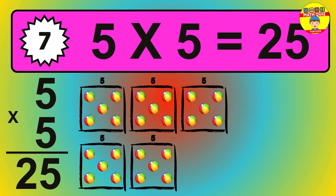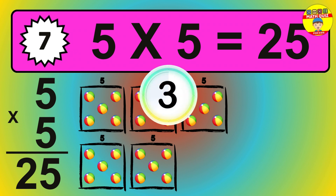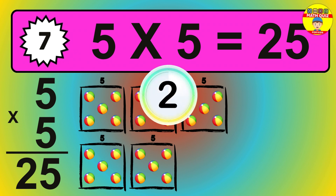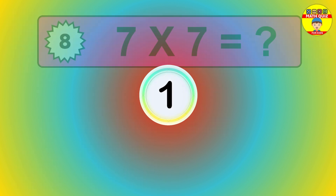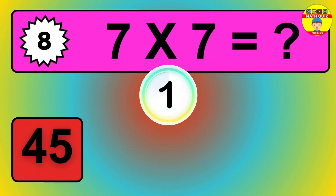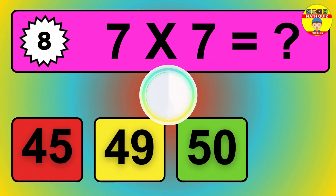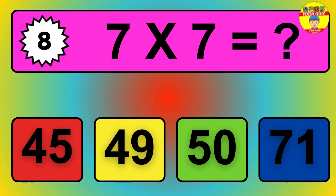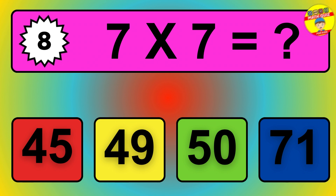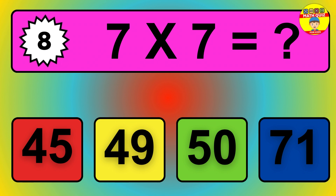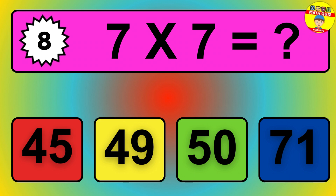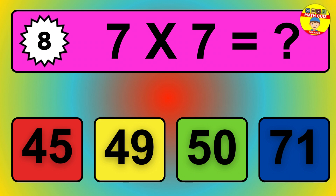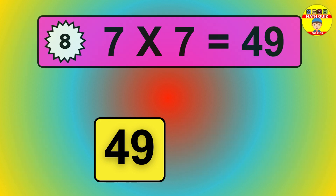Question 9. 3 times 2 equals what? The answer is 3 times 2 is 6. To calculate, we have 3 groups with 2 balls each one. So, how many balls do we have? 6 balls.